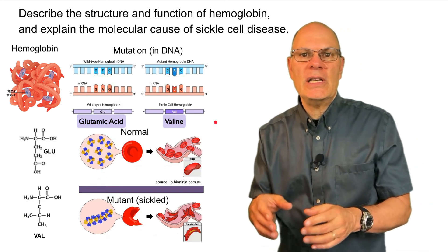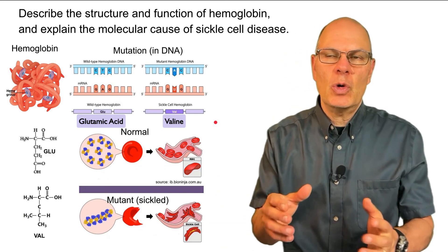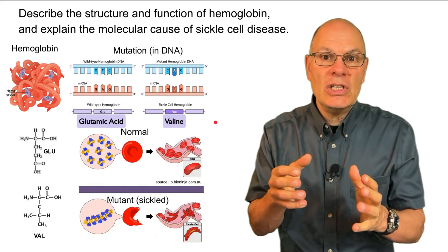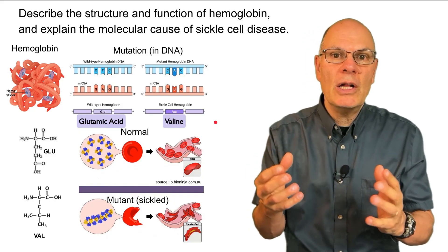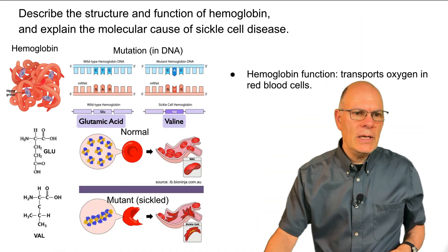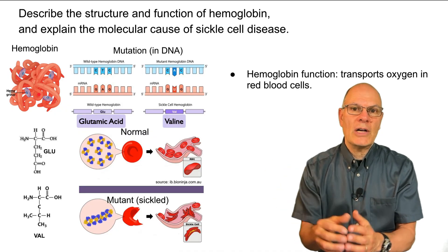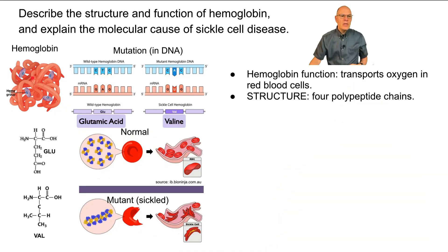So sickle cell disease is an inherited blood disorder. It was one of the first molecular genetic diseases that was really well understood. The molecule that is in question here is hemoglobin. And hemoglobin, its function is to transport oxygen in our red blood cells. The structure, it's a quaternary protein. It's made of four polypeptide chains.